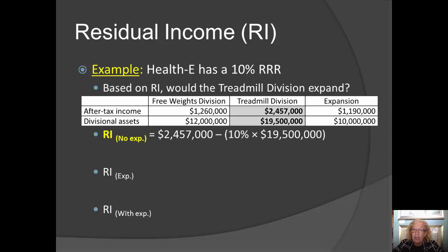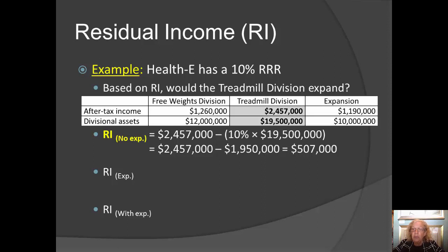Without the expansion, the treadmill division's residual income is the difference between the income it generated and the required rate of return times its invested assets. The divisional income is greater than 10% times the divisional assets. Therefore, the division has a positive residual income of $507,000 — meaning having and using these assets to make treadmills has enriched the firm as a whole by $507,000 after considering the cost of capital.